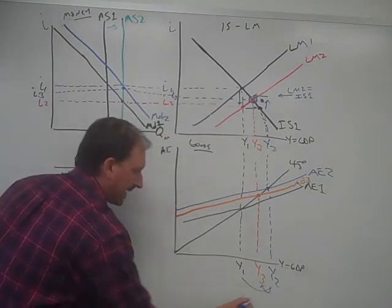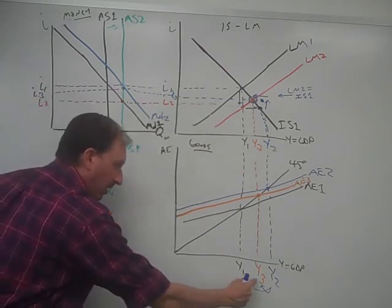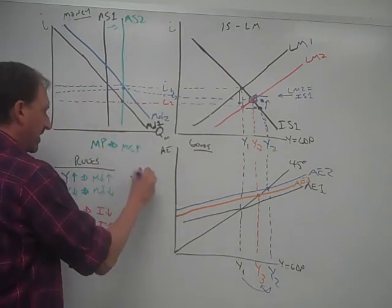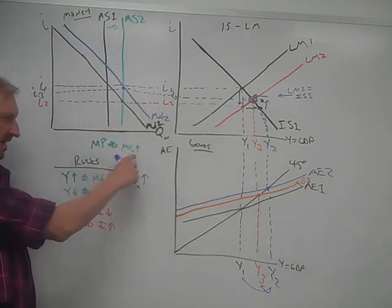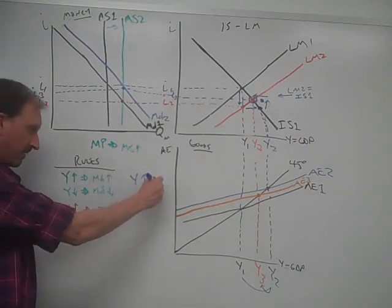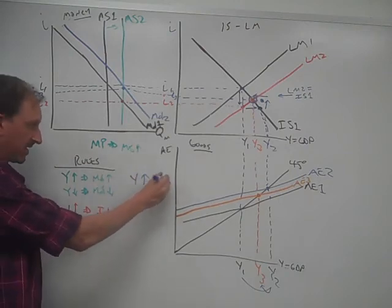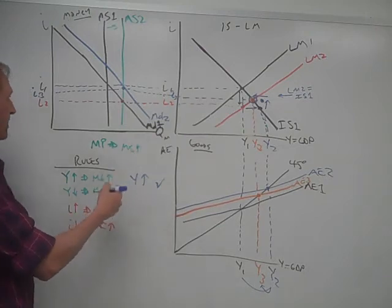So what's happened out of all this? Y went up and then came back down again, but at the end of the day, Y1 to Y3, Y goes up. Monetary policy pushed money supply up, and that means that GDP went up and income went up. That was the goal. That's what we want to see happen. That was the goal there. What do we get with it?